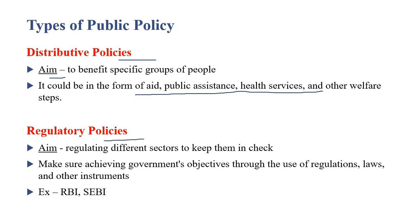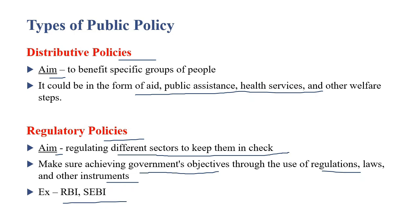फिर आती है regulatory policy। Regulation का मतलब है control, तो control या regulation से related जो policies होंगी वो regulatory policies कहलाएंगी। इन policies का aim होता है different sectors को check में रखना ताकि वो अपनी power का misuse न करें। ये policies make sure करती हैं कि government अपने objectives को achieve कर पाए through regulations, laws and other instruments। इसके examples हैं RBI और SEBI — RBI banking sector को regulate करता है, वहीं SEBI stock markets को regulate करता है।